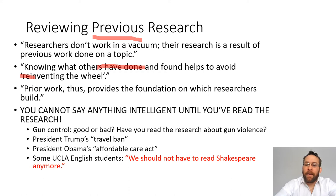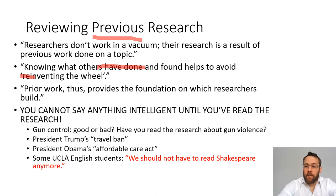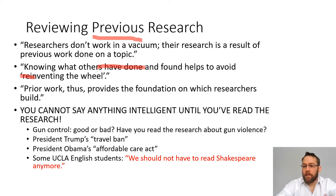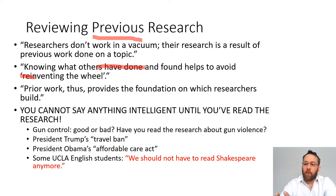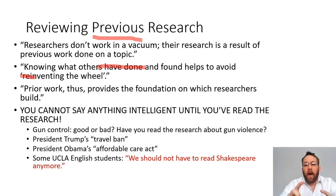You cannot write a 10-page research paper in an intro class and have no citations. Scholarship is a conversation. The reason we cite other people's work is to let others know that we have heard the conversation and are jumping in with knowledge of where it stands. When you get a master's degree and a PhD, a lot of it is about understanding the history of your field — being able to say, I know this material, I've read the work, I can cite it, and now I want to add something new to the conversation.